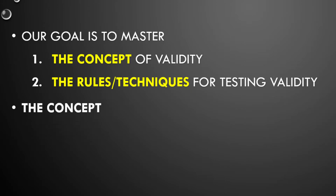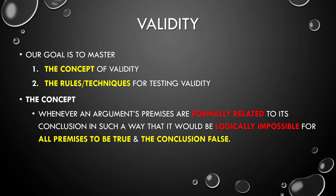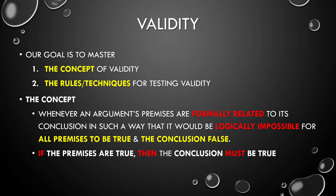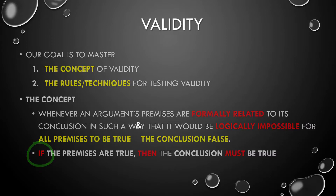For now, let's get the concept down. When the conclusion of an argument follows from its premises — really follows — we say the argument is valid. Or better: an argument is valid whenever its premises are formally related to its conclusion in such a way that it would be logically impossible for all premises to be true and the conclusion false. So in a valid argument, if the premises are true, then the conclusion must be true. Notice the 'if' — this is going to be important.